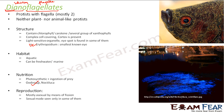Regarding reproduction, both sexual and asexual modes are seen, but mostly asexual by means of fission. In fission, the cell elongates and the parent splits into two daughter organisms. Sexual mode of reproduction is seen only in some of them and is not very common. These are some of the important characteristics of dinoflagellates.